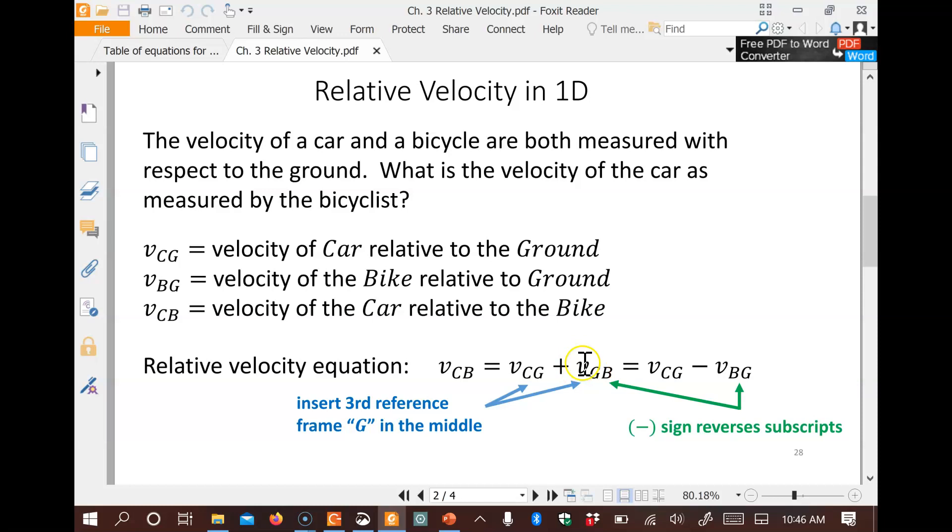If you want to reverse the two subscripts, so the velocity of the ground as observed by the bike, if we want to reverse that, we just get a negative sign because someone on the bike sees the ground going in the opposite direction at the same speed, and putting a minus sign just reverses that direction and keeps the speed the same.